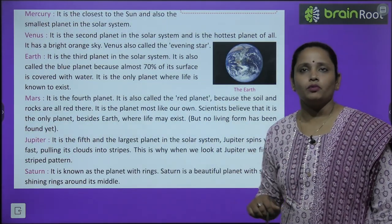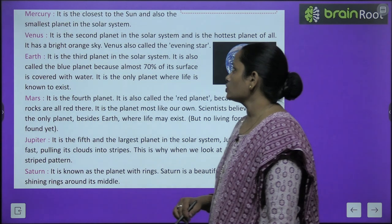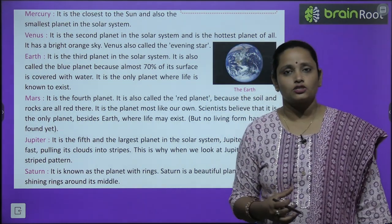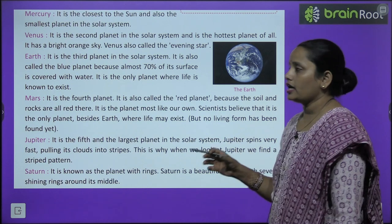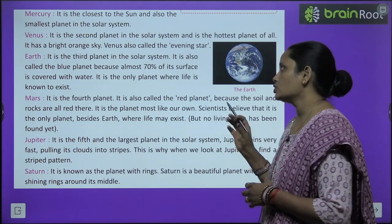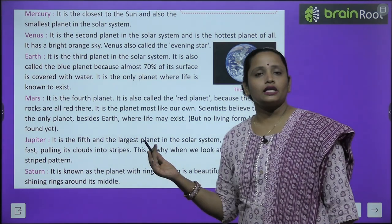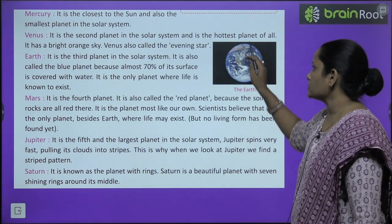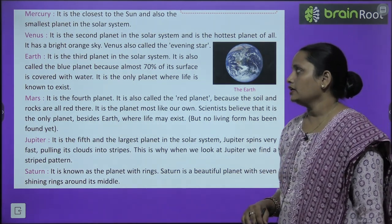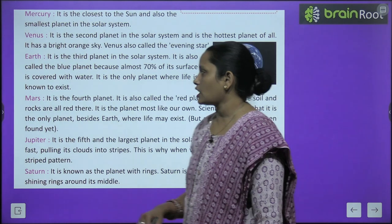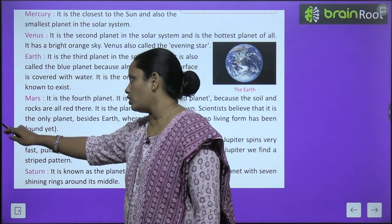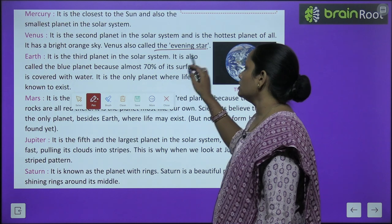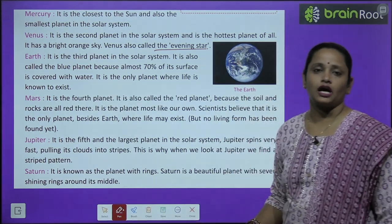Next comes Mercury. It is the closest to the sun and is the smallest planet in the solar system. After Mercury comes Venus, which is the second planet and the hottest planet. It has a big orange sky, and Venus is also called the evening star.